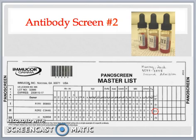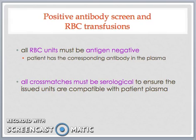Back to our positive antibody screen example. After further antibody investigations, an anti-big-E was found in Mr. Murray's plasma. This means the technologist must retrieve red cell units that are not only ABO compatible, but they must also be big E antigen negative to complete the serological cross-match for Mr. Murray. The technologist must mix and incubate his plasma with a small sample of donor red cells from each red cell unit ordered. If there is no red cell clumping between his plasma and that particular unit, then that unit is serological cross-match compatible for the patient. The computer verifies the results and prints out the tag for each compatible unit, which is attached to the unit and released from the blood bank.